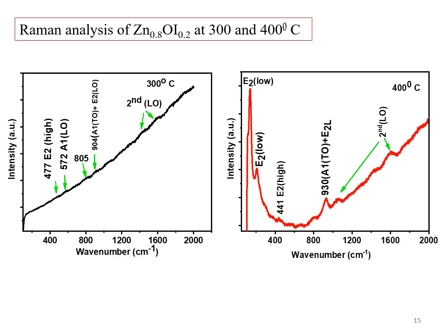Raman spectra of samples at calcination temperatures of 300 and 400 Celsius show existing of second-order Raman mode, which is assigned to the hexagonal structure. This is compatible with the XRD results.